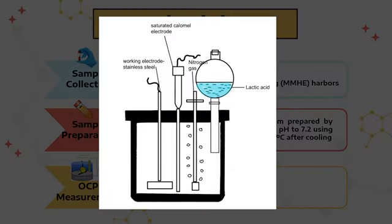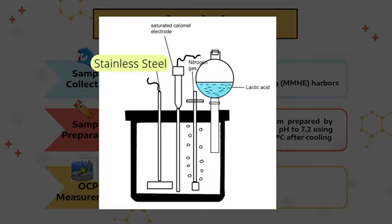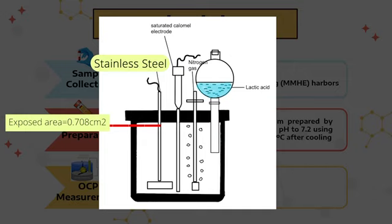Next, the open circuit potential changes of stainless steel samples in different conditions were measured. The experimental setup followed the ASTM standard. The stainless steel samples were immersed in an electrolyte solution, with an exposed area of approximately 0.708 square centimeters. A copper wire was soldered to the electrode for electrical connection, and the electrode was protected by a glass tube.